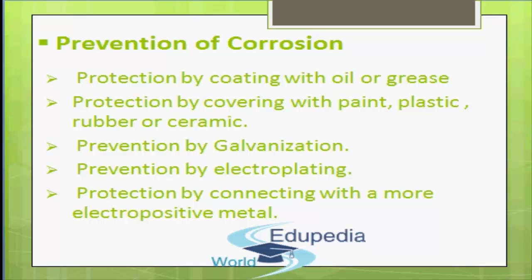These methods are commonly used for prevention of corrosion. The first method is protection by coating with oil or grease — corrosion is prevented by coating the material with oil or grease. The second method is protection by covering with paint, plastic, rubber, or ceramic — corrosion is prevented by covering the material with a coat of paint, plastic, rubber, or ceramic.